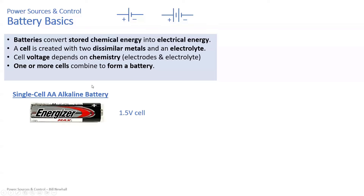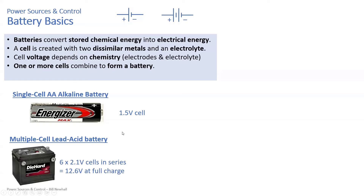A single-cell AA alkaline battery is often called a 1.5-volt cell — it has two electrodes and an electrolyte that gives nominally 1.5 volts, though that varies. A lead-acid battery, like in your car, is a good example of a multi-cell battery: it's composed of six lead-acid cells, each 2.1 volts, giving nominally 12.6 volts at full charge. Even though it's commonly called a 12-volt battery, 12.6 volts is typical for a full charge, and 13.6 or higher is considered a charging voltage.